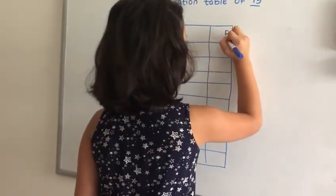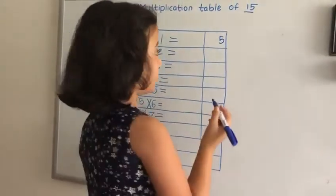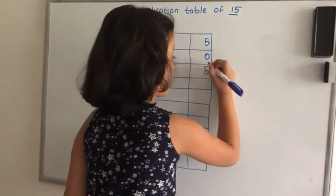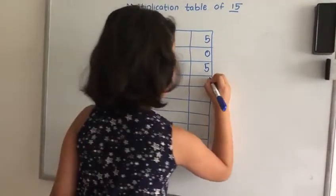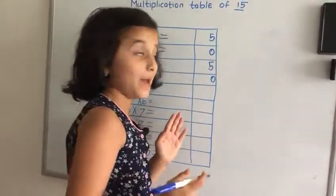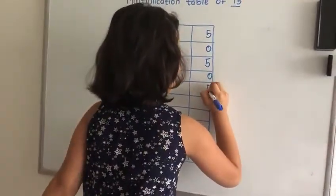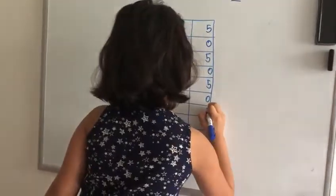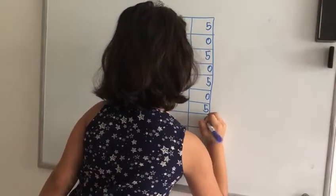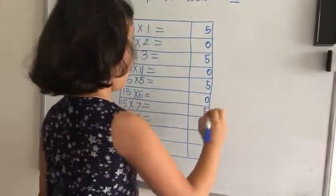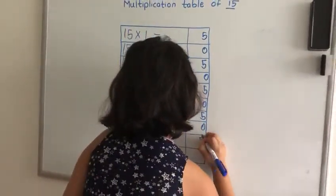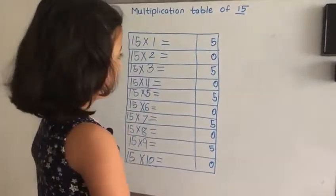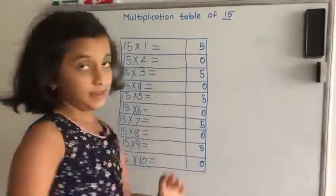5 and then 0, 5 and then 0. So we did the last digit pattern.